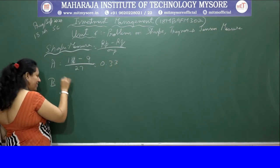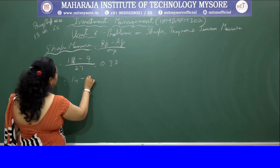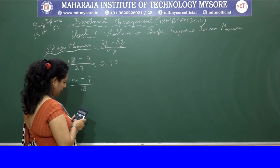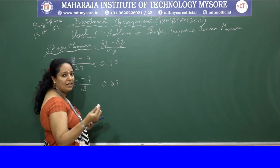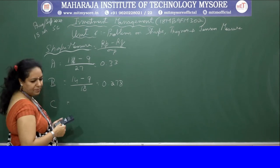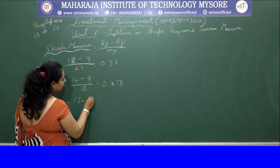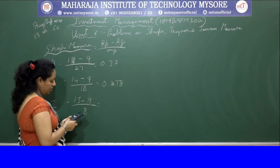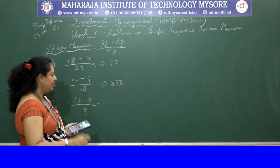For stock B, the return is 14 and standard deviation is 18. So 14 minus 9 divided by 18 gives 5 divided by 18, which is 0.278. For security C, return is 15 and standard deviation is 8. So 15 minus 9 divided by 8 gives 6 divided by 8, which is 0.75.